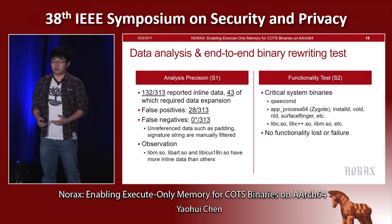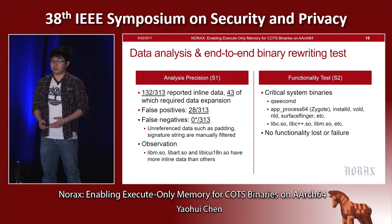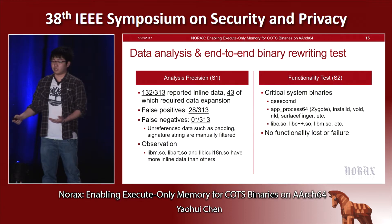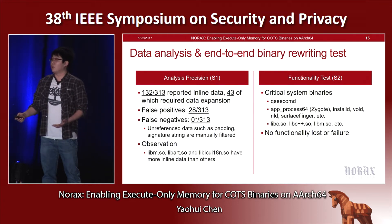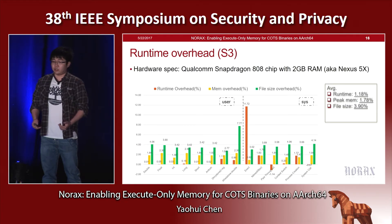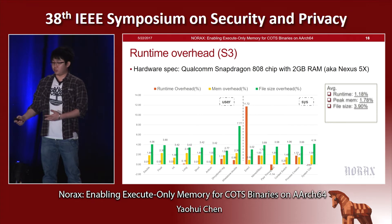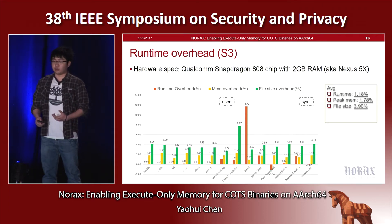We observed that LibN, LibR, and LibIQ18N SOs reported much more inline data than other analyzed binaries. For functionality tests in set S2, we converted 20 critical system binaries including QcComD, the Qualcomm driver, and important system daemons such as Zygote, InstoD, and SurfaceFlinger, which support day-to-day tasks like launching applications, making phone calls, and rendering the frame buffer. We also converted low-level complex libraries such as LibC and LibN, and during functionality testing observed no failures. For set S3, we ran UnixBench binaries on a Qualcomm Snapdragon chip with 2GB memory (Nexus 5X phone) and found average runtime overhead, peak memory overhead, and file size overhead were all negligible.